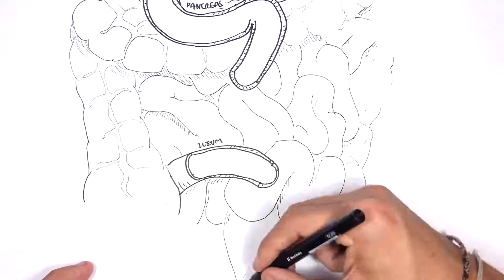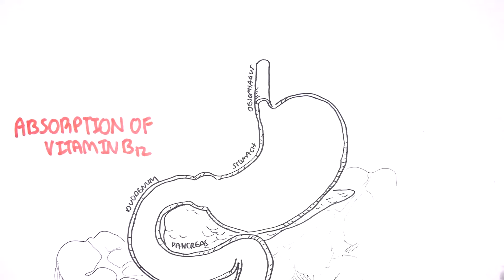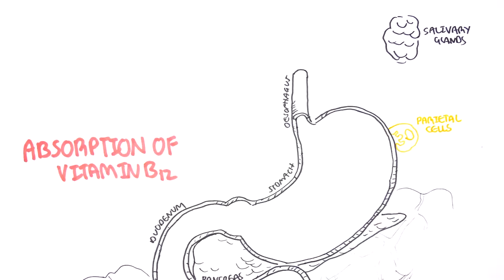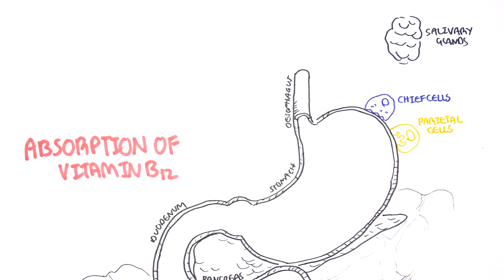Other important structures and cells are the salivary glands here, and within the stomach are two important types of cells that we must talk about. These are the chief cells, which produce your pepsinogen, and your parietal cells, which secrete hydrochloric acid.